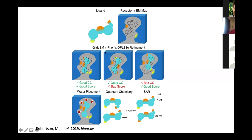This is also coupled to a water placement prediction algorithm, quantum chemistry calculations, and SAR data to build confidence in the produced pose. Additionally, after the Glide-EM step we perform refinement with Phenix OPLS3E, which is a more advanced refinement that includes the OPLS3E force fields for the ligand to help ensure the geometry isn't distorted by the density.